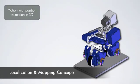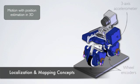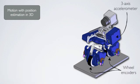The localization and mapping strategy consists of four steps. 3D odometry tracks the robot position and orientation using wheel encoders and accelerometers.